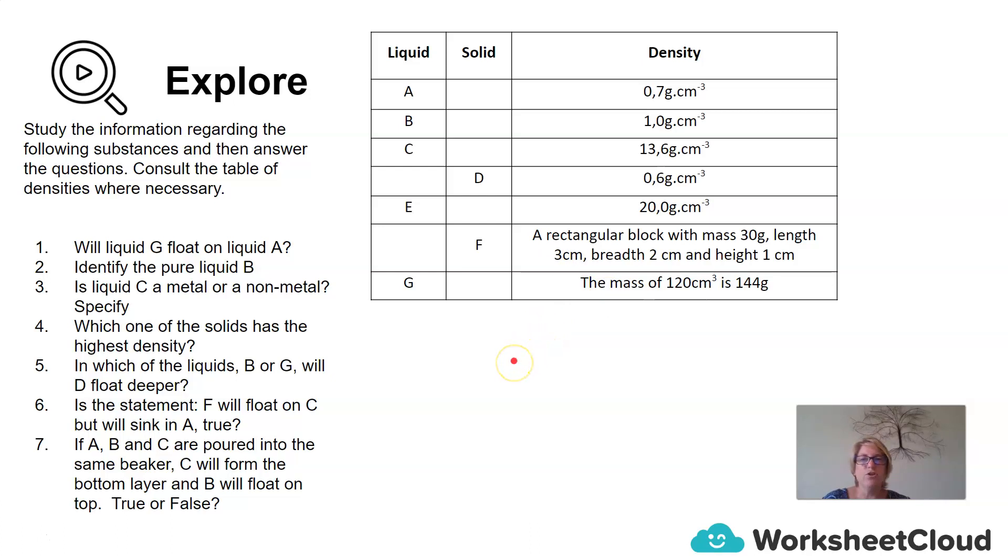Put your thinking caps on, and let's try and go through these seven questions together. Will liquid G float on liquid A? Identify the pure liquid B. So we'll need a density table to answer that. Is C a metal or a non-metal? So again, we'll need to go and have a look at the density table. Which one of the solids has the highest density? So there we have a density for D, but we'll need to go and calculate the density for F.